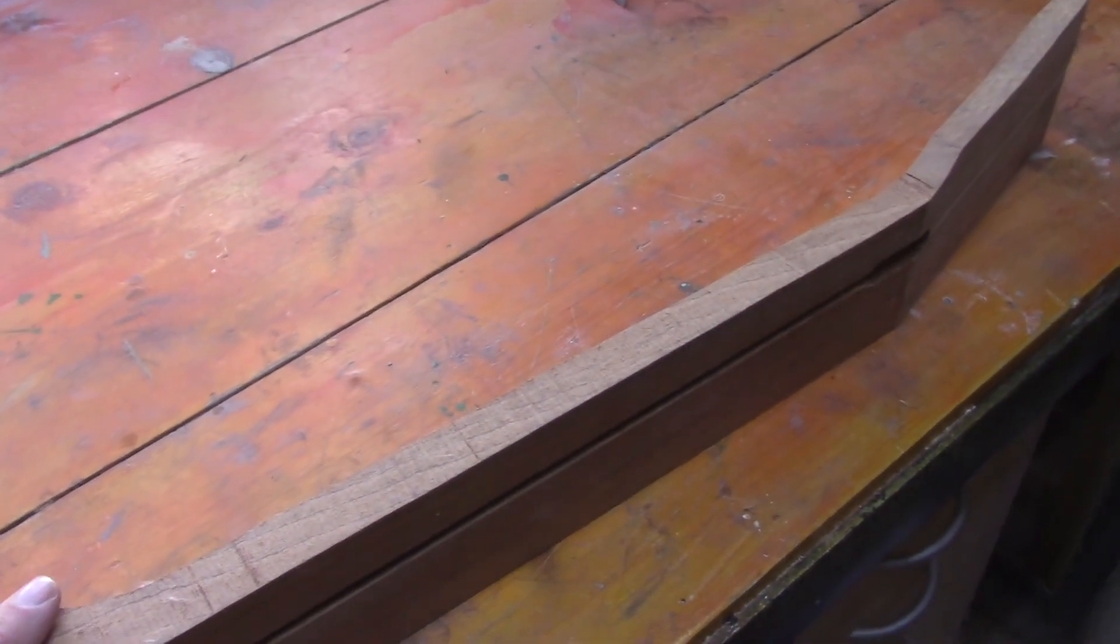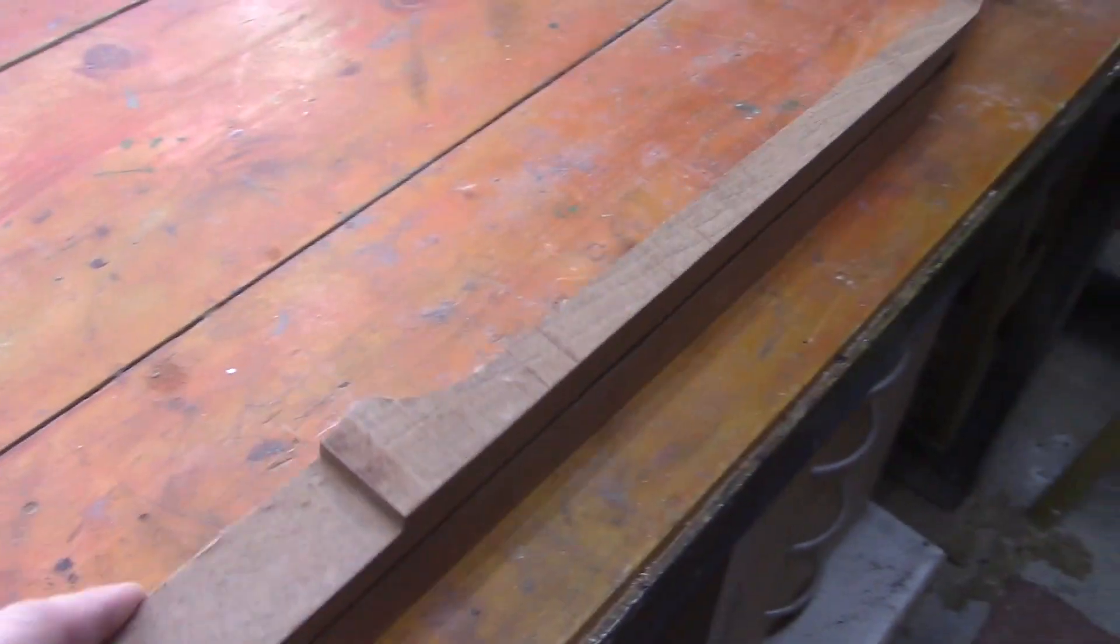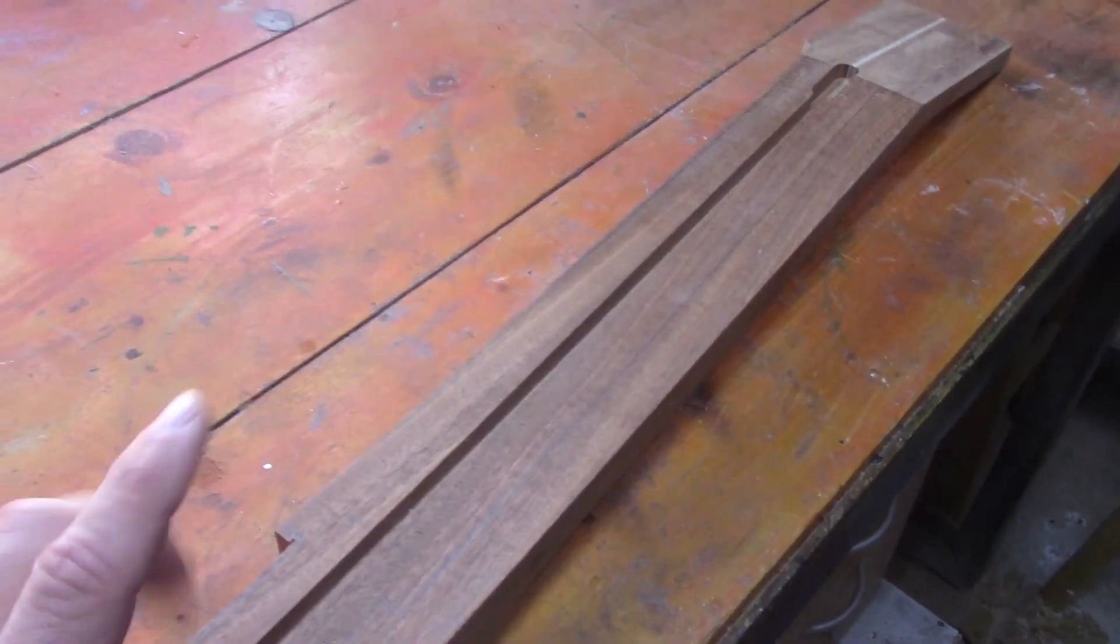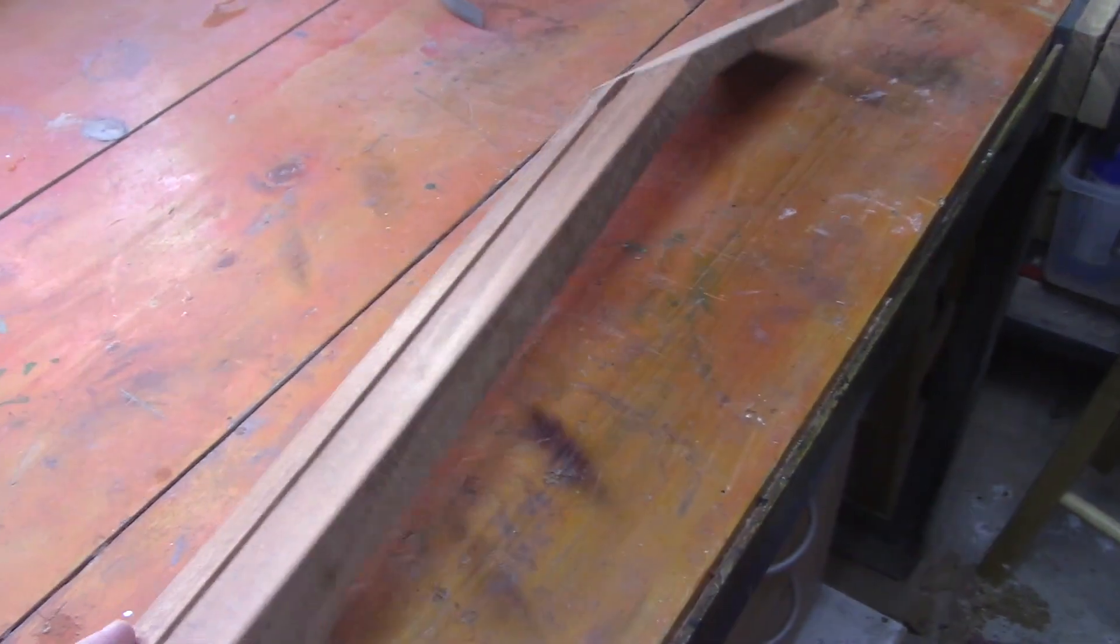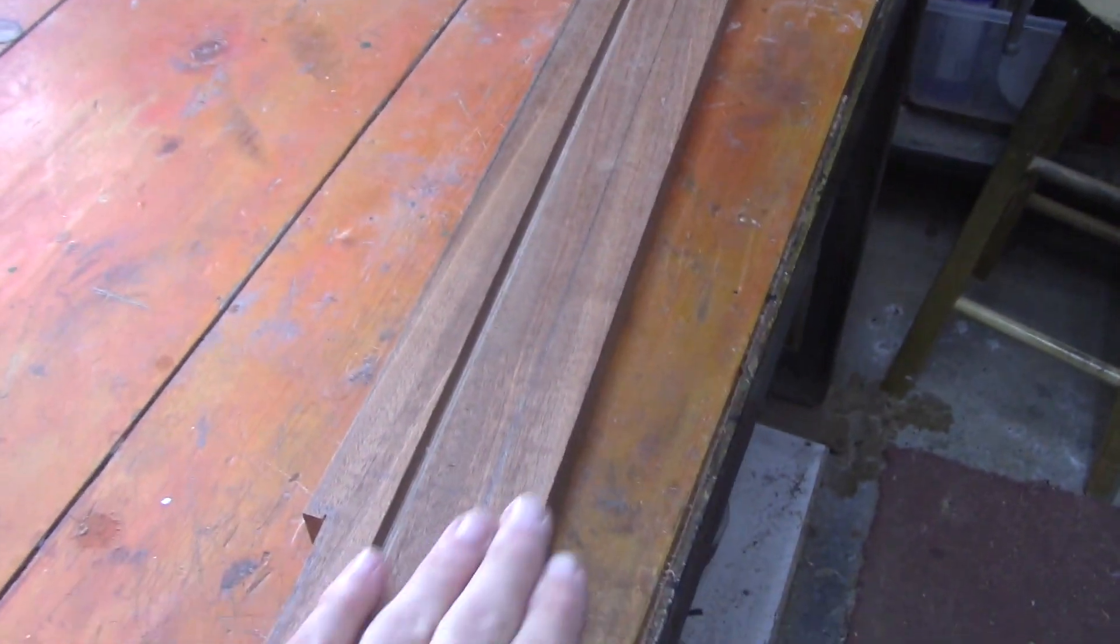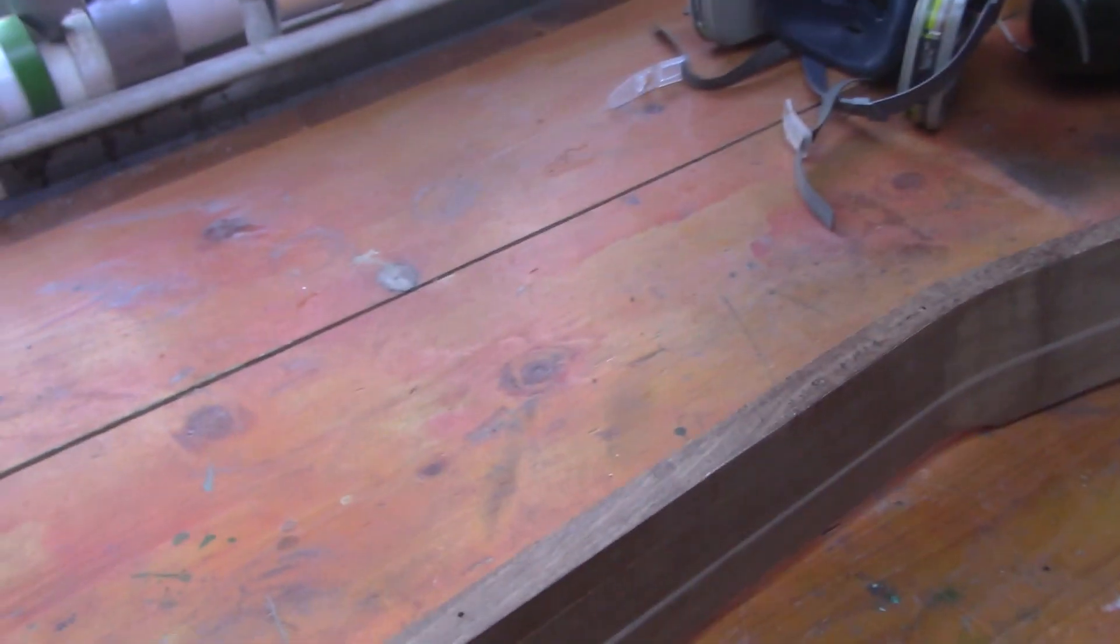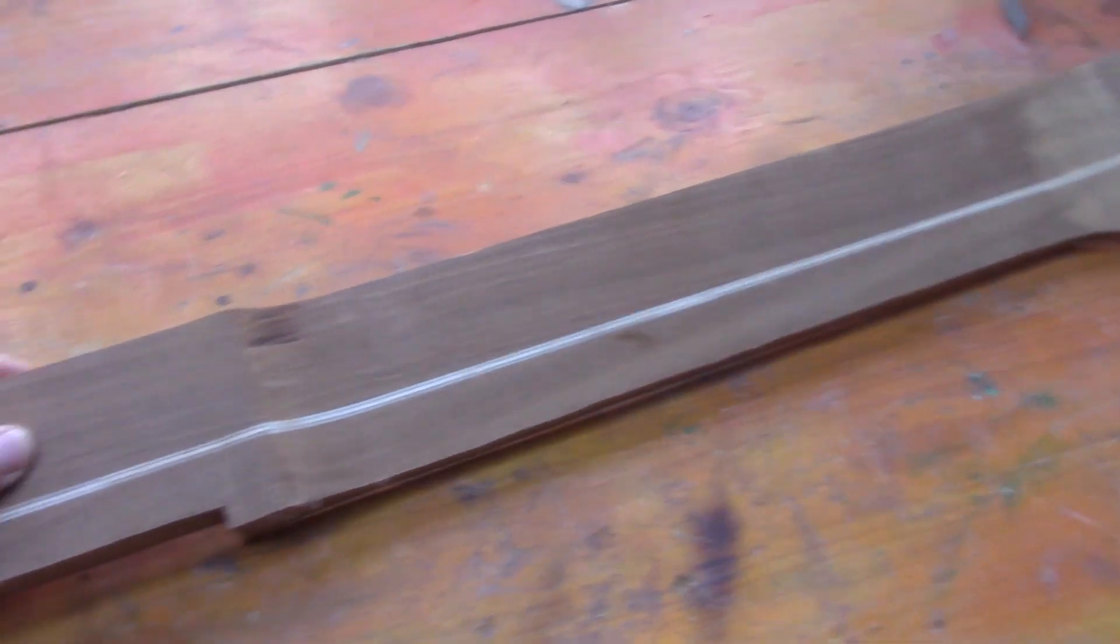After much Robo sanding, we've pretty much got our neck shape done. We got ahead of ourselves again and started to band saw out some of the neck, but that's the next step. We'll start band sawing out the rest and get ready to route out the final shape.